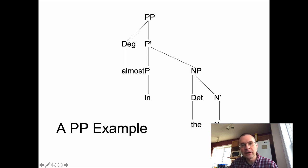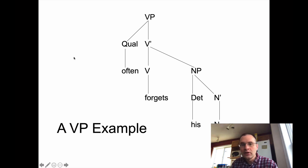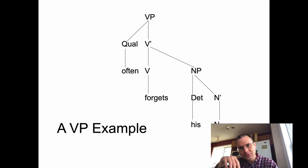For 'almost in the basket': this looks very similar — we're just changing the labels of the lexical categories. We're dealing with a prepositional phrase rather than a verb phrase. The specifier is the degree word 'almost,' the head is the preposition 'in,' and the complement linking up to P-bar is an NP — 'the basket.' So the same slot-filling rules apply.